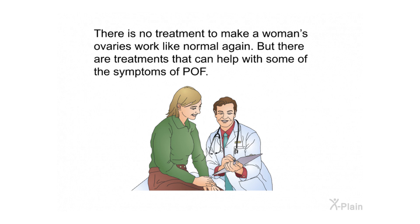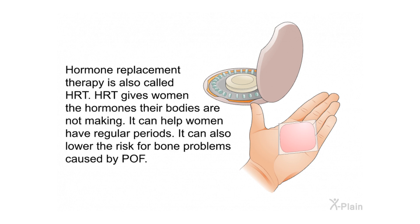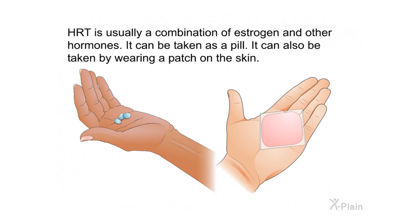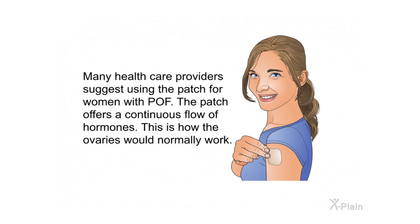There is no treatment to make a woman's ovaries work normally again, but there are treatments that can help with some symptoms of POF. Hormone replacement therapy, also called HRT, gives women the hormones their bodies are not making. It can help women have regular periods and lower the risk of bone problems. HRT is usually a combination of estrogen and other hormones, and can be taken as a pill or worn as a patch on the skin. Many health care providers suggest using the patch, as it offers a continuous flow of hormones similar to how the ovaries would normally work.